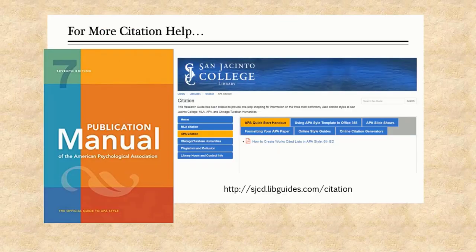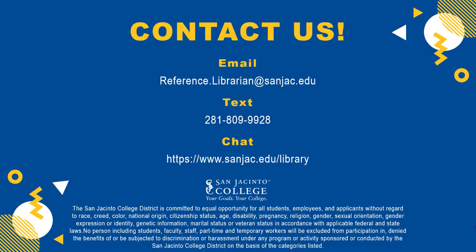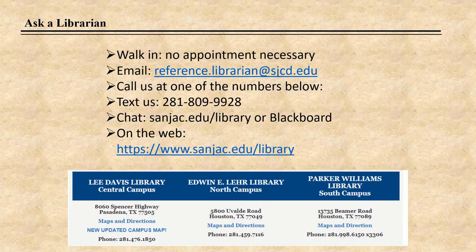For more citation help, see the Publication Manual of the American Psychological Association, 7th Edition, at any library reference desk or on reserve at your campus library. Also check out our citation research guide. San Jacinto College librarians are always willing to help — just ask a librarian.